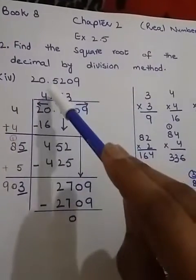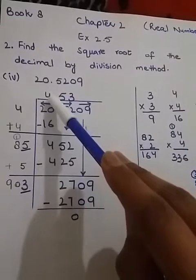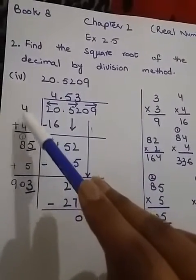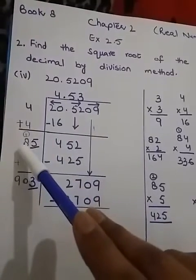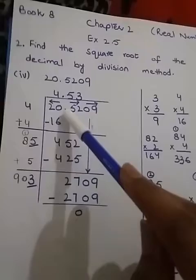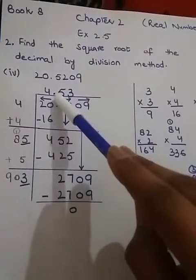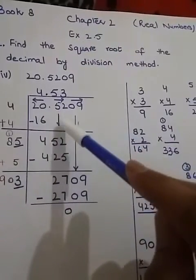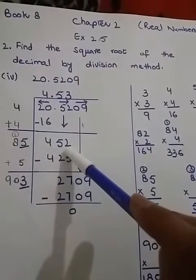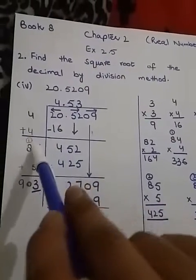This 4 I'm going to write here, and this 4 I'm going to write here in the answer, and this 4 I will add here as well. 4 plus 4 gives us 8. 20 minus 16 is 4. This decimal will go up in the answer, and then I will bring down this pair. The new number is 452.